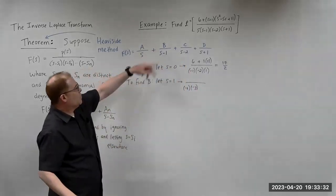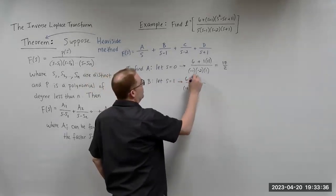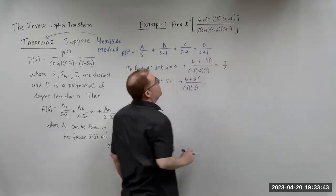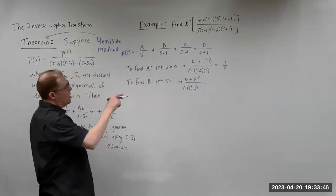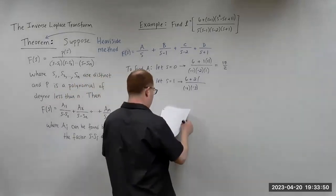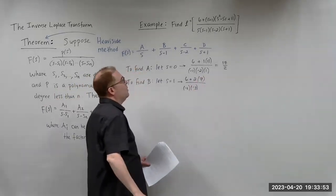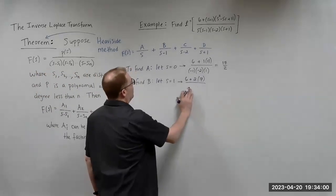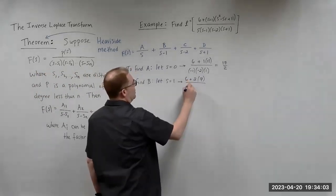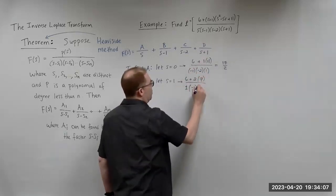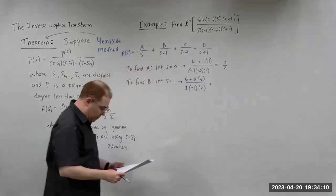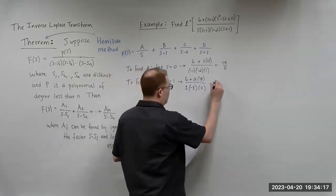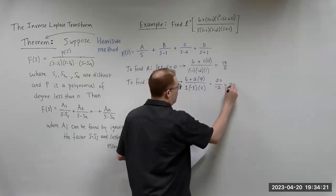To find B, let S equal 1. Plugging 1 into the numerator gives 1 minus 5 plus 11, so the numerator value is 7. On the denominator, letting S equal 1 and plugging into S, S minus 2, and S plus 1 gives 1, negative 1, and 2. So B equals 7 over 1 times negative 1 times 2, which is 7 over negative 2, giving B equals negative 10. Wait — that gives 20 over minus 2, which is negative 10.